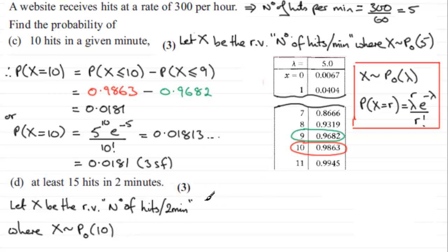So when it comes to now working out the probability, let's just border that off. Therefore, when we look at the probability that X is at least 15 hits, that is greater than or equal to 15.